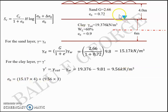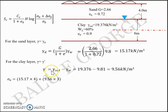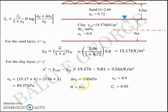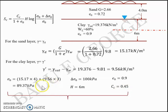To find the effective stress σ₀, we take 4 meter thickness of sand at 15.17 kN/m³ plus 3 meter thickness of clay at submerged unit weight 9.56 kN/m³. We use 3 meters because we are finding the settlement at the mid-depth of the clay layer, and since the water table is at the interface, we use the dry unit weight for sand (15.17) and the submerged unit weight for clay (9.56). This gives σ₀ = 89.37 kilopascals. With all values substituted into the settlement equation — Δσ₀ = 100, E₀ = 0.9, H = 6 m, Cc = 0.45 — the settlement is 0.463 meters.